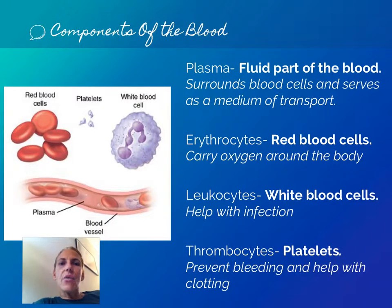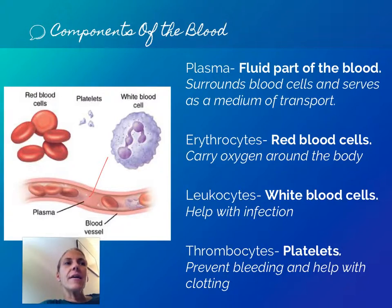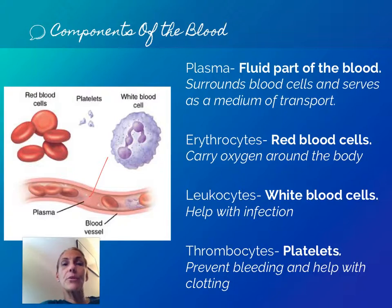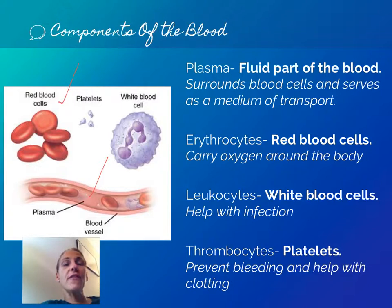To start out, we'll talk about the components of whole blood. The majority is made up of plasma, which is the liquid portion of blood — it takes up about 55 percent of your overall blood volume. Its job is basically a medium of transport, transporting cells, nutrients, important proteins, clotting factors, antibodies, hormones, and it's also a medium for chemical reactions.